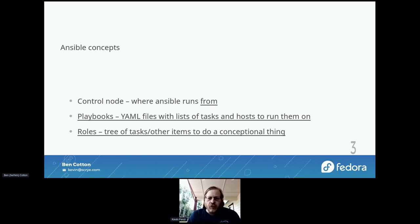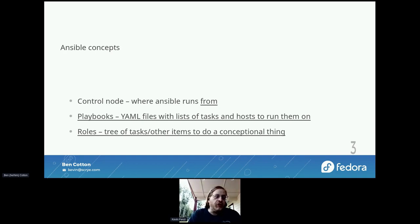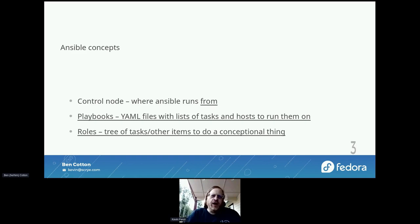The control node is where Ansible runs from. It's usually the place that you have your playbook code and roles and things like that. The team is working on something to use containers for your control nodes, which is pretty cool. But right now, a control node is typically a RHEL, Fedora, or similar Linux box that SSH-es into the other things you're controlling and runs your code.